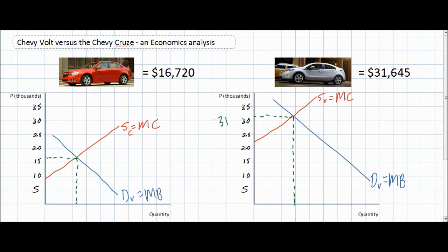So what we end up with is a price of $31,000 for Chevy Volts corresponding with the particular quantity demanded and quantity supplied and a price of only $16,000 for the Chevy Cruze corresponding with its own quantity demanded and quantity supplied.